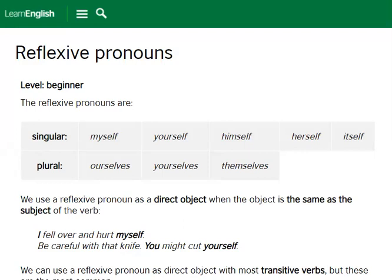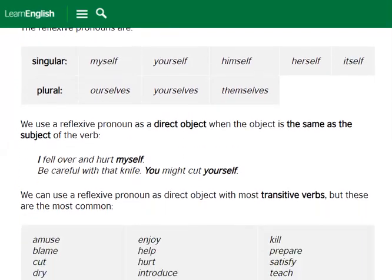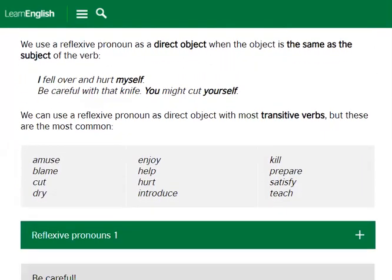We use a reflexive pronoun as a direct object when the object is the same as the subject of the verb. For example: 'I fell over and hurt myself.' Here, 'I' is the subject and 'myself' is the direct object — myself is the reflexive pronoun. 'Be careful with that knife. You might cut yourself.' We can use the reflexive pronoun as a direct object with most transitive verbs.